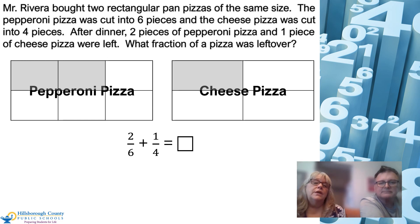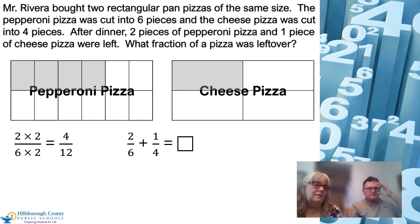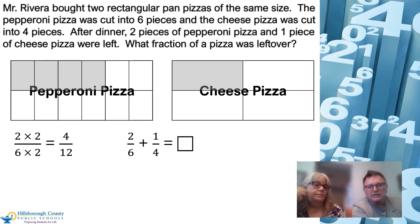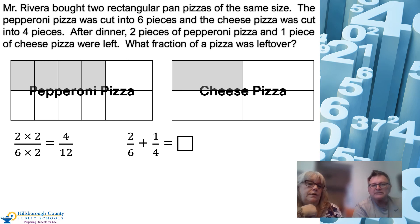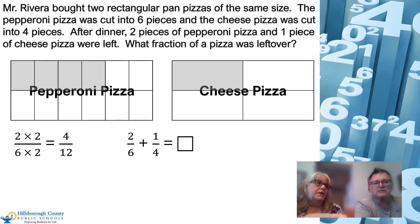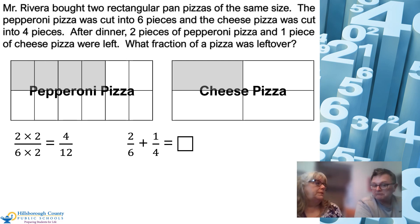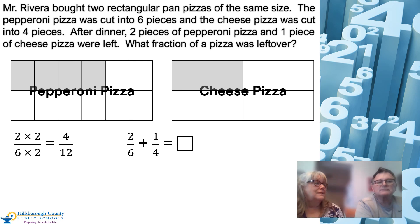I have two-sixths of a pepperoni pizza, and we know we split those into twelfths. What happened is we took our two pieces that were left over and cut each one of them into two parts. Can I think of that as two times two? Two groups of two pieces equals four pieces — and at the same time I was splitting all of my six pieces into two equal parts, so each one of my six pieces became two pieces. Six groups of two pieces gives a total of twelve pieces. So now I know that my two-sixths is equivalent to four-twelfths.